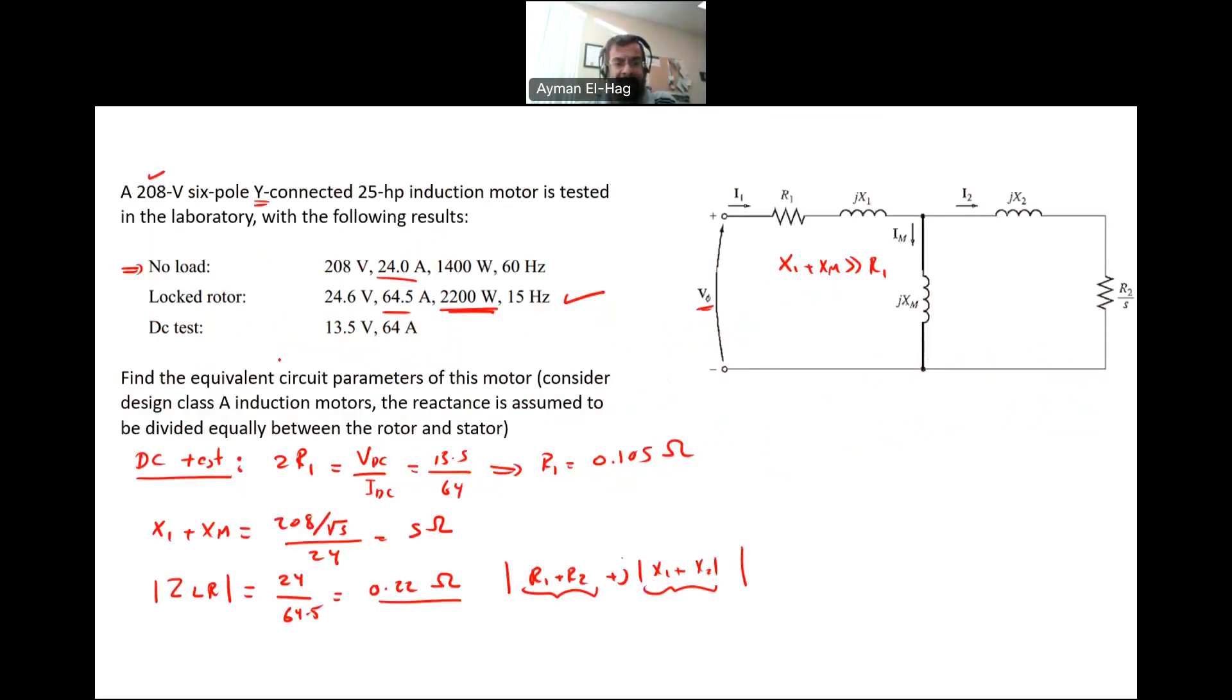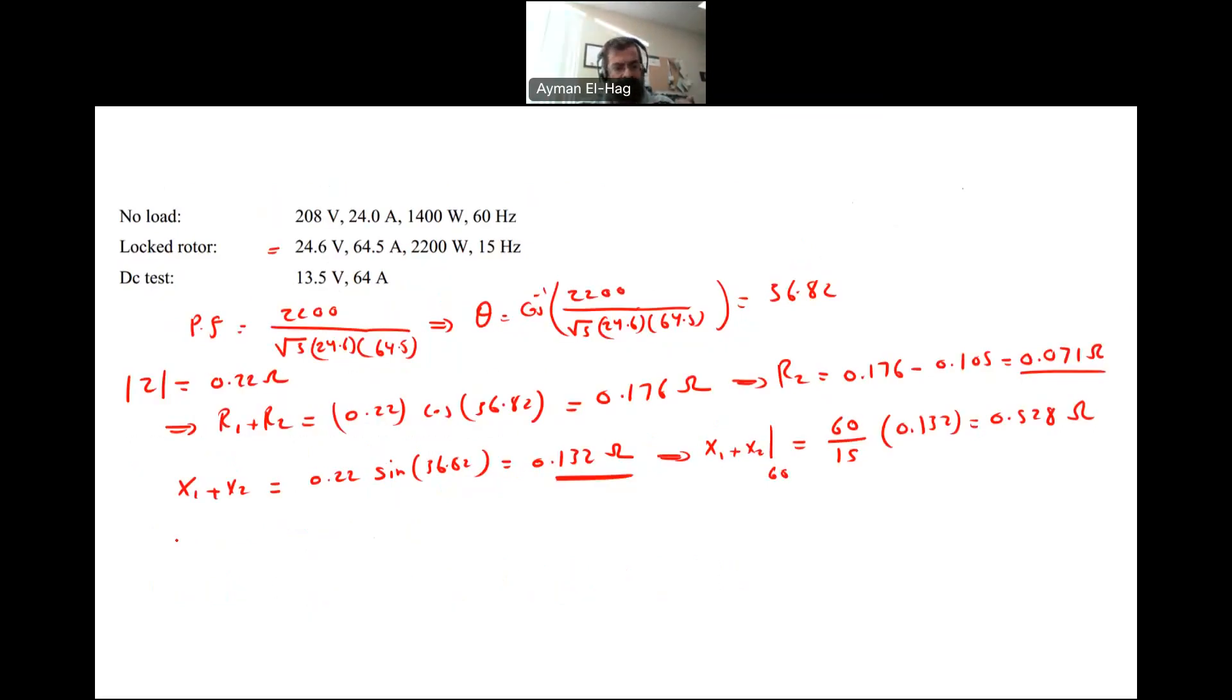If the question says it's a class A, that means the reactance is assumed to be divided equally. So X1 and X2 are equal. X1 equals X2 equals 0.528 divided by 2, which gives me a value for each one of them as 0.264 ohms. I found X1, X2, R1, and R2.